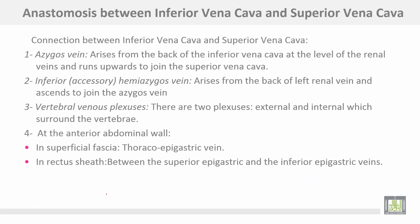Anastomosis between the inferior vena cava and superior vena cava represents the connection between the two systems. Number one: the azygos vein arises from the back of the inferior vena cava at the level of the renal vein and runs upwards to join the superior vena cava. Number two: the inferior hemi-azygos or accessory hemi-azygos arises from the back of the left renal vein and ascends to join the azygos vein.